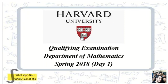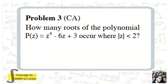Harvard University Qualifying Examination, Department of Mathematics, Spring 2018, Day 1. This is one of the best universities in the world by some rankings. The problem we want to solve is the third problem of Day 1: how many roots of the polynomial p(z) = z⁴ - 6z + 3 occur where |z| < 2?